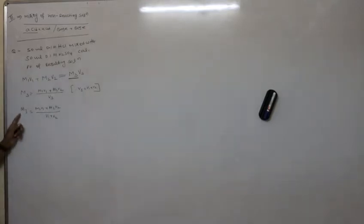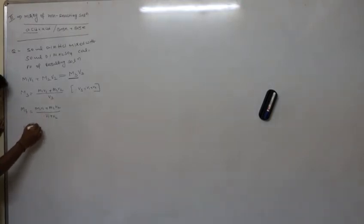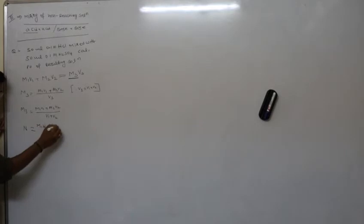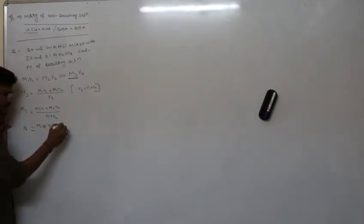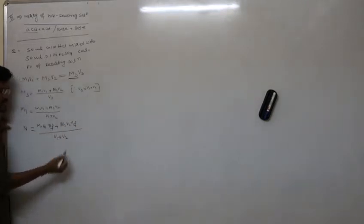As discussed in the previous class on ionic equilibrium, normality must be used. To convert molarity to normality, we multiply by the n-factor. So the resultant normality = (M1·V1·n₁ + M2·V2·n₂) / (V1 + V2).